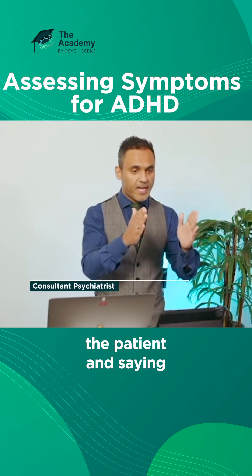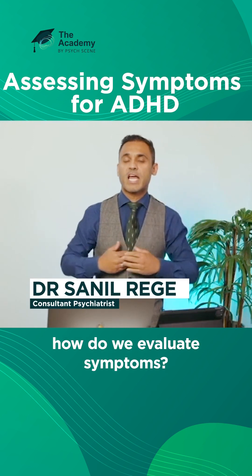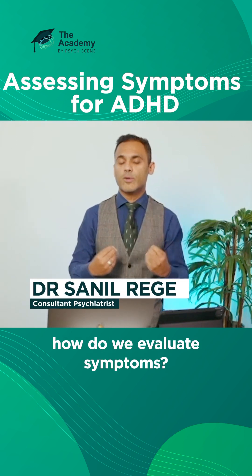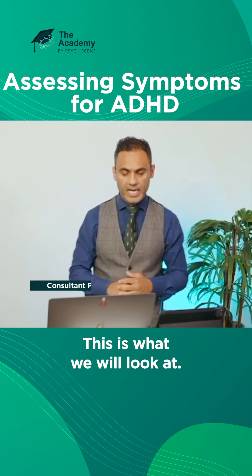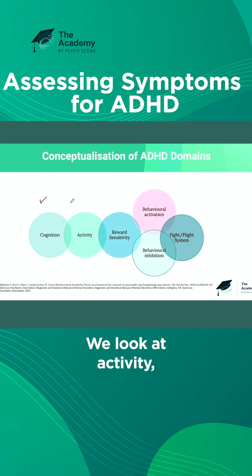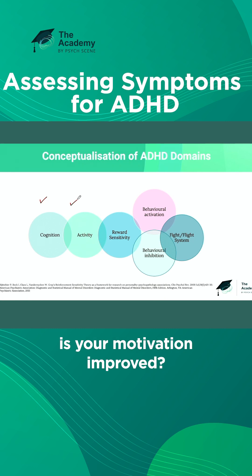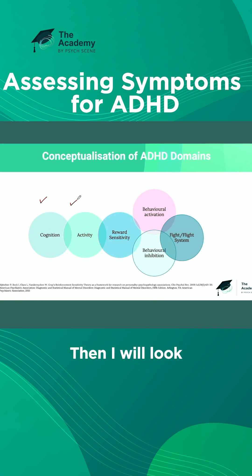When we're examining the patient and prescribing a medication, how do we evaluate symptoms? This is what we will look at. We will look at cognition — you have your list of symptoms. We look at activity, which means I will ask: is your motivation improved? And has their hyperactivity reduced?